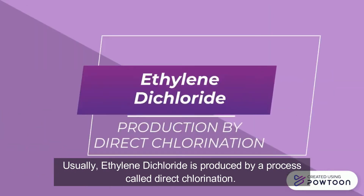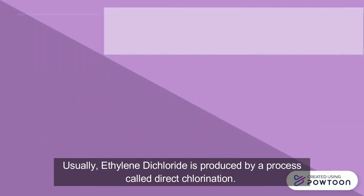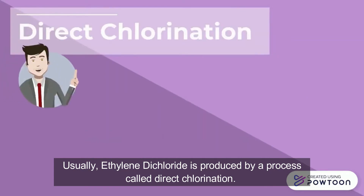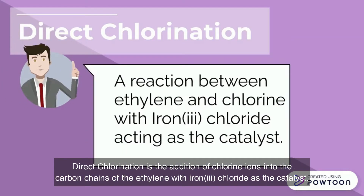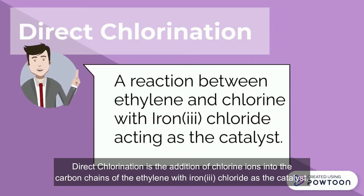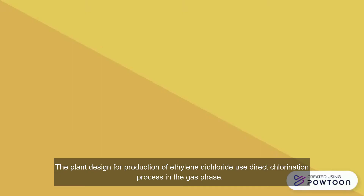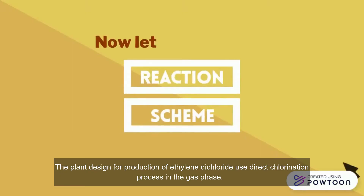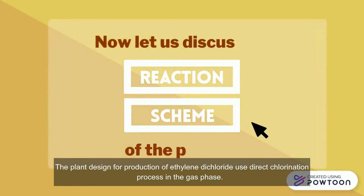Usually, ethylene dichloride is produced by a process called direct chlorination. Direct chlorination is the addition of chlorine ions into the carbon chains of the ethylene, with iron(III) chloride acting as the catalyst. The plant designed for production of ethylene dichloride used the direct chlorination process.